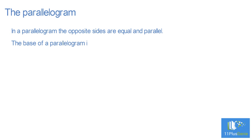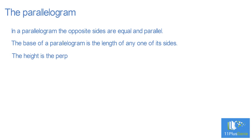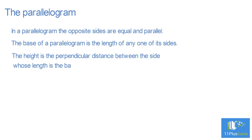The base of a parallelogram is the length of any one of its sides. The height is the perpendicular distance between the side whose length is the base and the opposite side. The animation below shows how to change a parallelogram into a rectangle.